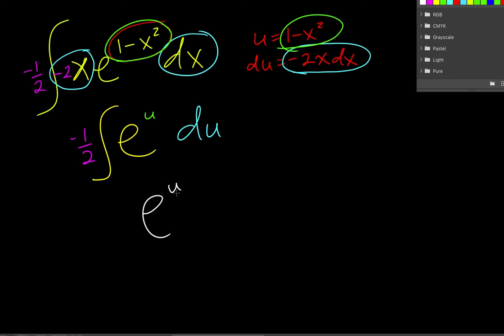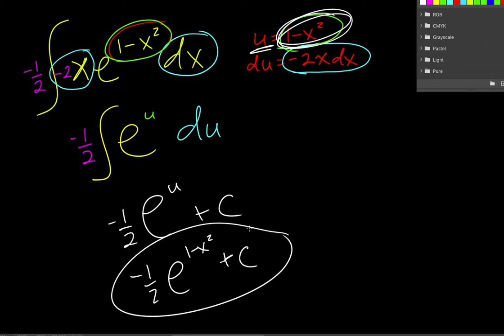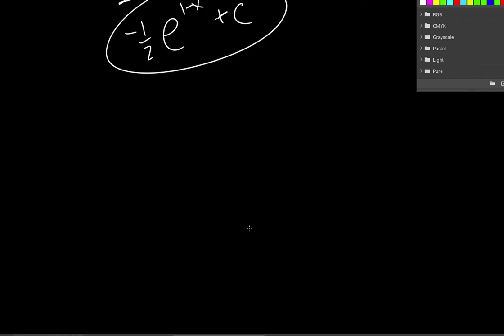Now we just integrate, e to the u just becomes e to the u. And I still have my negative 1 half out in front. And I have my plus c. Now the only thing I need to do is replace my u with my u value. And that is the final answer on that one.